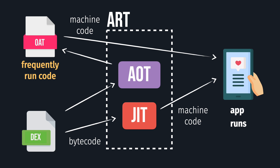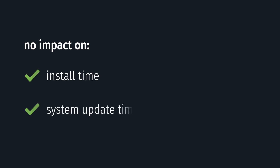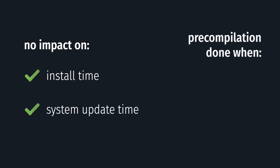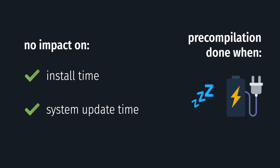As it turns out, for most apps only 10–20% of code is frequently used. After this change, ART no longer impacted the speed of app installs and system updates. Re-compilation of key parts of an app happened only while the device was idle and charging, to minimize the impact on the device battery.